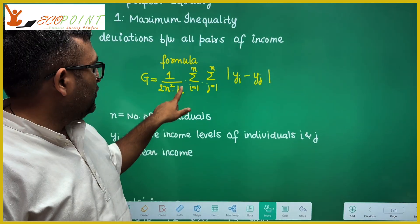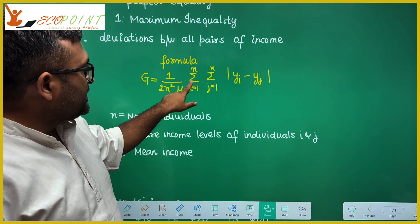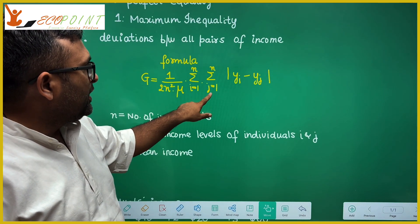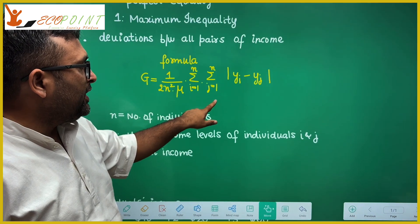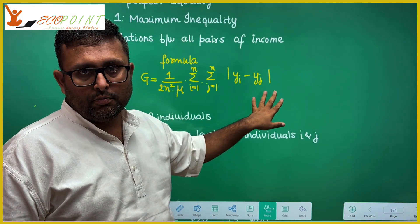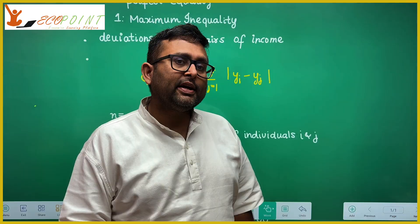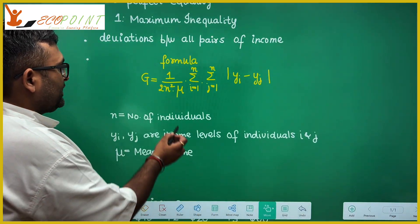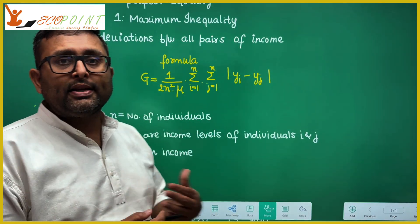This is the formula for Gini coefficient: 1 upon 2N square mu, summation of I starting from 1 to N, summation of J starting from 1 to N, absolute deviation between the pair of income. Gini coefficient is normalized by dividing the population square, that is N square. There are N square such pairs.